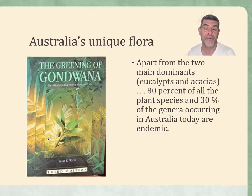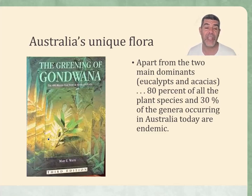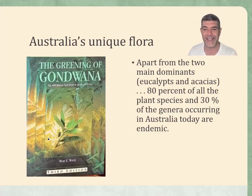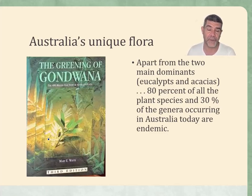One of her quotes from this book is: apart from the two main dominants — the eucalypts and acacias — 80% of all the plant species and 30% of the genera occurring in Australia today are endemic, occurring as local species to the Australian continent. This is a testament to the isolation of Australia and the fact that it has developed in concert with changing climate, human habitation, fire, and a whole range of different environmental pressures that have had an influence on this very spectacular and unique flora.